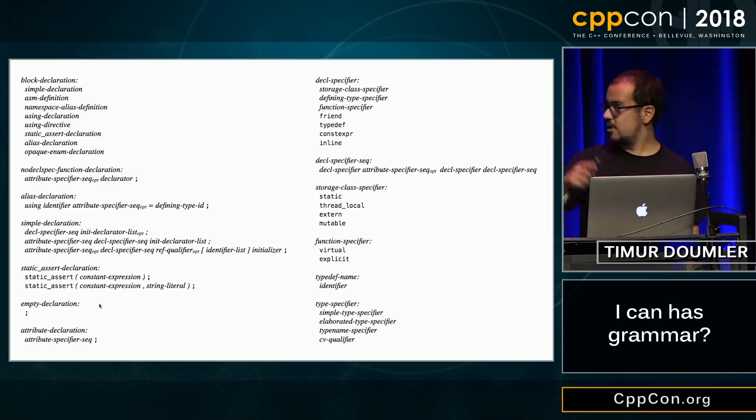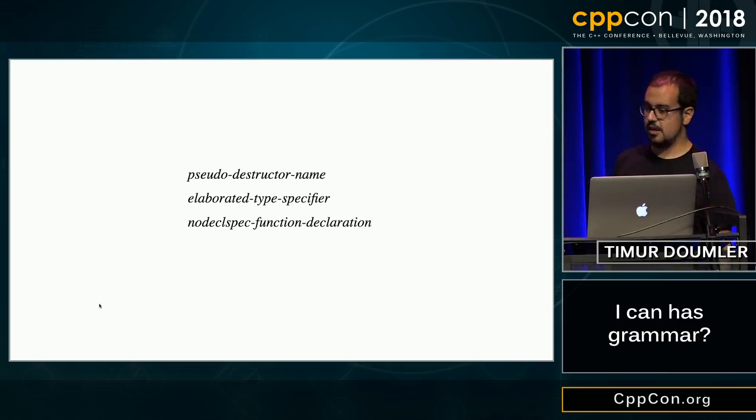C++ has a grammar. It's about 20 pages in the standard that looks like this. There's beautiful things in there, like the pseudo destructor name, elaborated type specifier, or the no-decl-spec function declaration, which is, of course, a function declaration with no decl-specifier-seq.